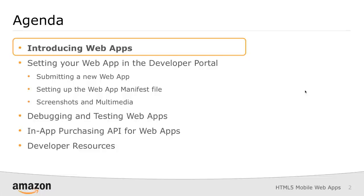We'll end up looking at the in-app purchasing API for web apps. This is an API that will allow you to monetize your mobile web app where you can sell digital goods, subscriptions, and entitlements through Amazon.